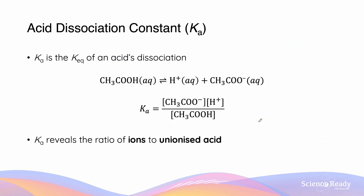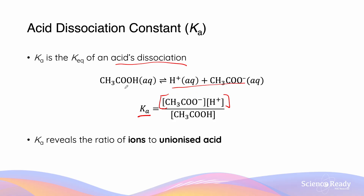Ka is the acid dissociation constant — it's the Keq of the acid's dissociation. We know that Keq is given by products over reactants, and Ka is no different. Ka, the acid dissociation constant, is going to be the products over the reactants.